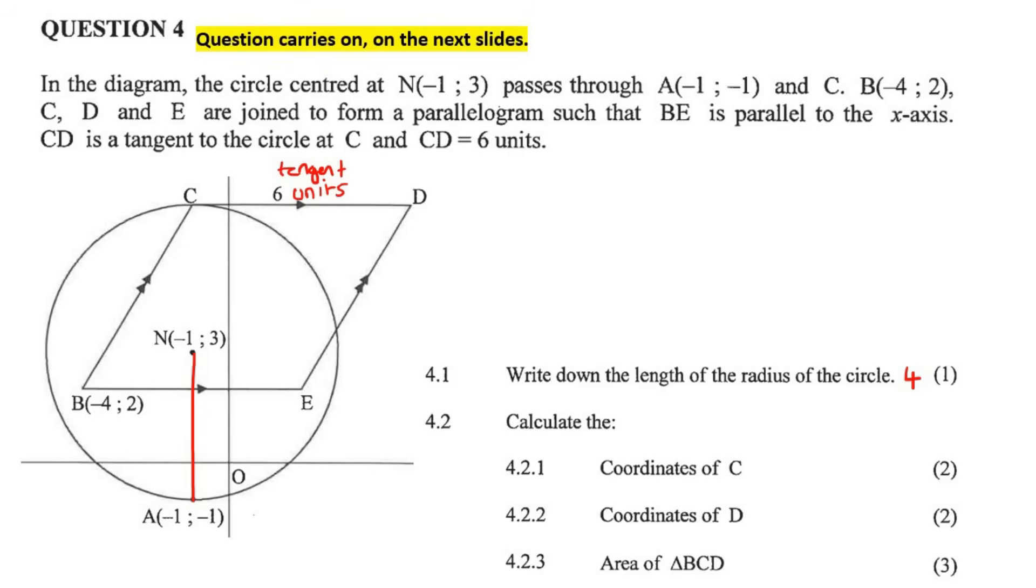Now it says calculate the coordinates of C. Well, you see, C would be directly above. I know that because I know that this line is parallel to the x-axis, so this line is also parallel to the x-axis, so this radius always hits a tangent at 90 degrees. So if this is parallel to the x-axis, then this line must be parallel to the y-axis, and that is why it has gone directly up like that. So C would have x-coordinates of minus 1. Because you can see it's minus 1, minus 1, minus 1. That doesn't change. But this distance over here would be 4, because it's the radius. So from N to C would be 4 units. So if you add 4 onto 3, you're just going to end up with 7. So C's coordinates would be minus 1 and 7.